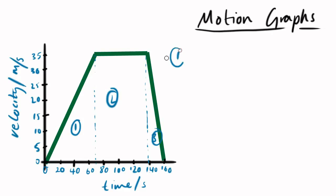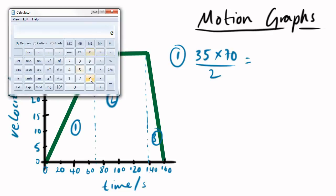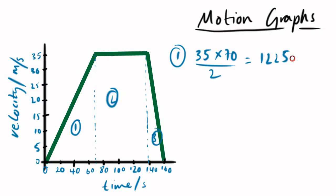All you have to do now is work out the areas that are represented by them. This area is 35 times 70, divided by 2, because it is a triangle. Don't make your life any harder than it has to be. Use the calculator. Thirty-five times 70, divided by 2, it's 1,225. So, between zero seconds and 70 seconds, this object's gone 1,225 metres. We want to know total distance travelled.